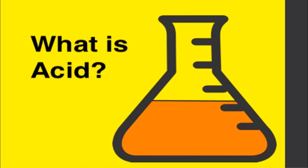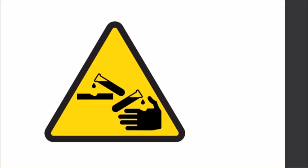Acid is even present in various foods that we consume. When you consume lemon, there is acid in it; when you consume tamarind, there is acid in it; when you consume vinegar, there is acid in it. So there are different types of acids. Even in our stomach, acid is present so that we can digest whatever we eat. Animals and plants also possess acids in them.